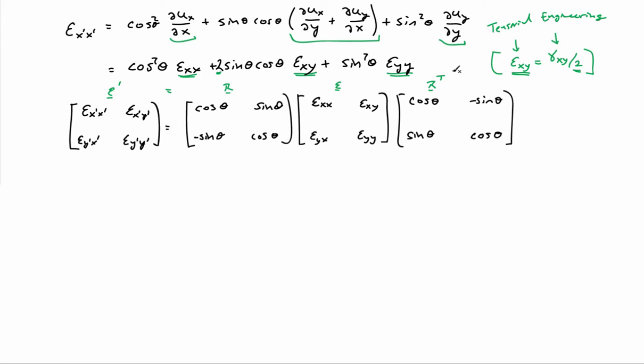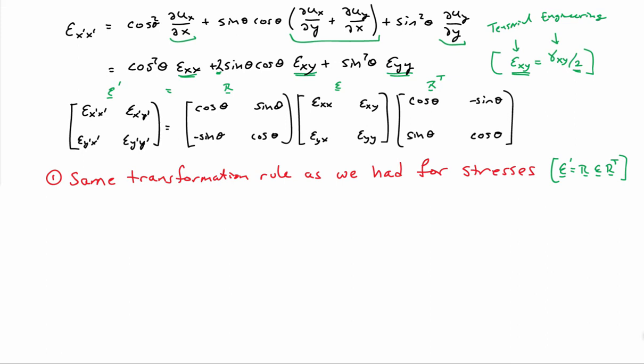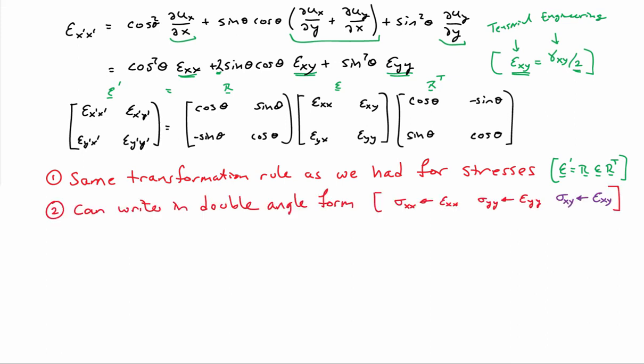There are no extra relationships to learn here — we get the same result as for stress transformations, with the exact same rules. You can also write the expressions in double angle form: just use the expressions we had before, replacing the normal stress in x by the normal strain in x, the normal stress in y by the normal strain in y. When replacing the shear stress, remember to use the tensorial shear strain; otherwise, you'll be off by a factor of two in your calculations.